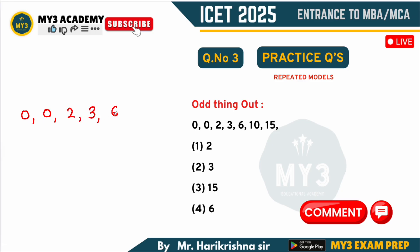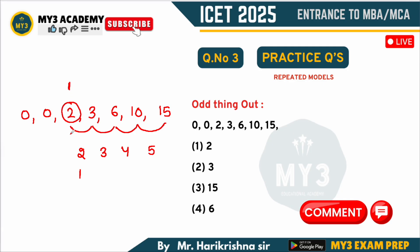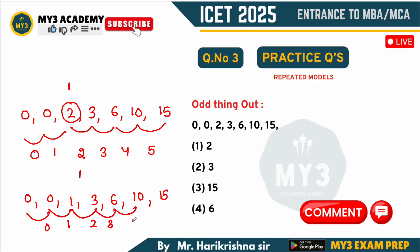Now observe this question: 0, 0, 2, 3, 6, 10, 15 — find the wrong term. The difference from 15 to 10 is 5, next difference is 4, next is 3, so the next difference must be 2. But we are getting a difference of 1, because 3 minus 2 is 1. So this number should not be 2. The correct sequence must be 0, 0, 1, 3, 6, 10, 15, with differences of 0, 1, 2, 3, 4, 5. The wrong term is 2, available as option 1.